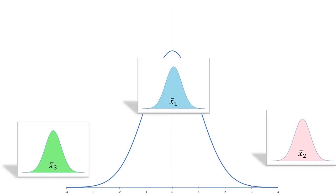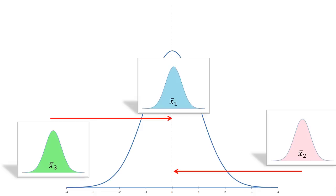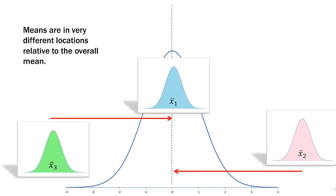Now look at this case. X bar sub one is pretty much right down the middle again. But X bar sub two is way over to the right — that distance is pretty far away. And X bar sub three is way over to the left. So we might conclude that each one of these sample means belongs to its own population. Only X bar sub one belongs to this background distribution. X bar sub two may belong to one that's off to the right, and X bar sub three may belong to one that's off to the left. The means are in very different locations relative to the overall mean in the background.